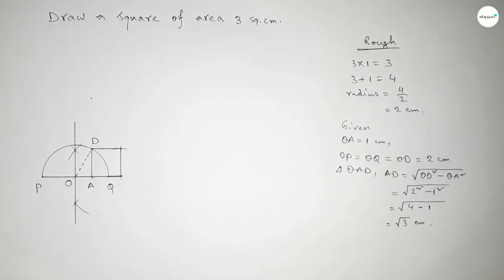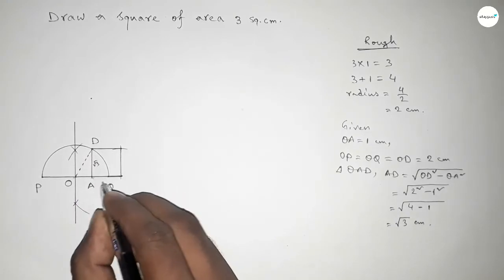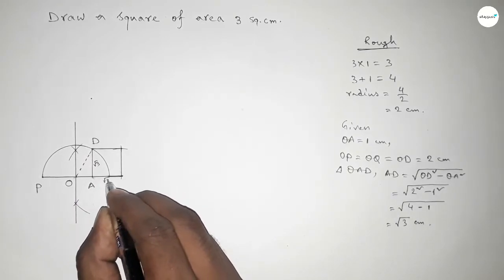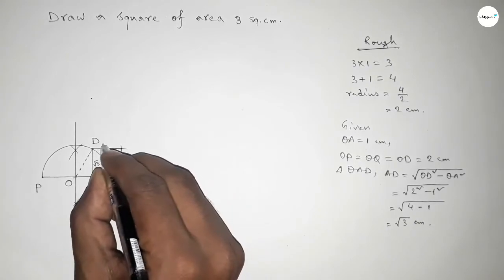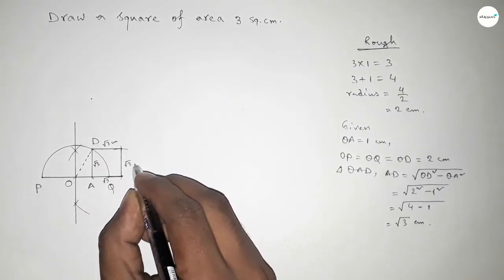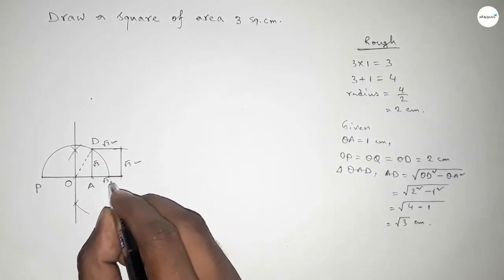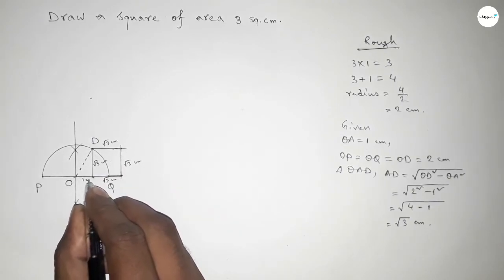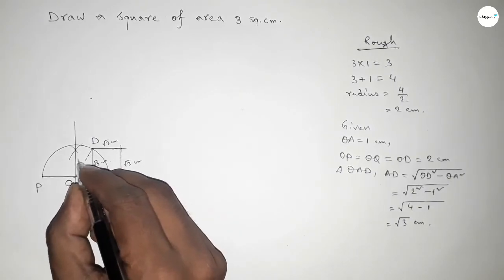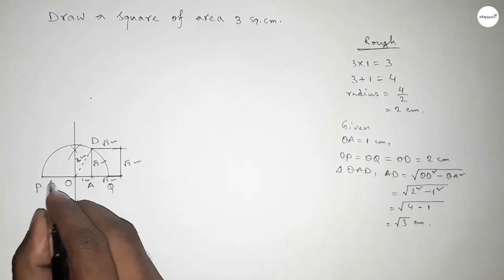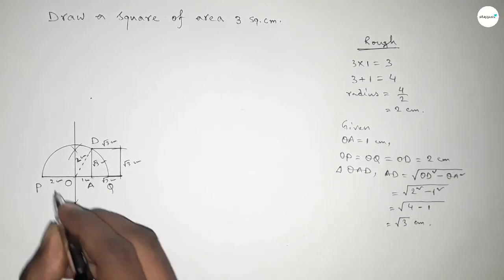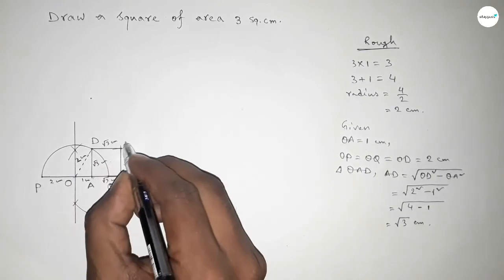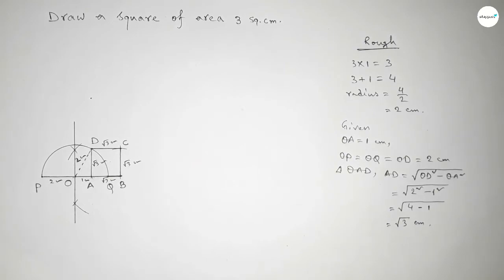Joining this side and joining this side. So this side is √3 centimeters, this is also √3 centimeters, this is √3 centimeters, and this is √3 centimeters. All sides are √3 centimeters. This is point B and this is point C.